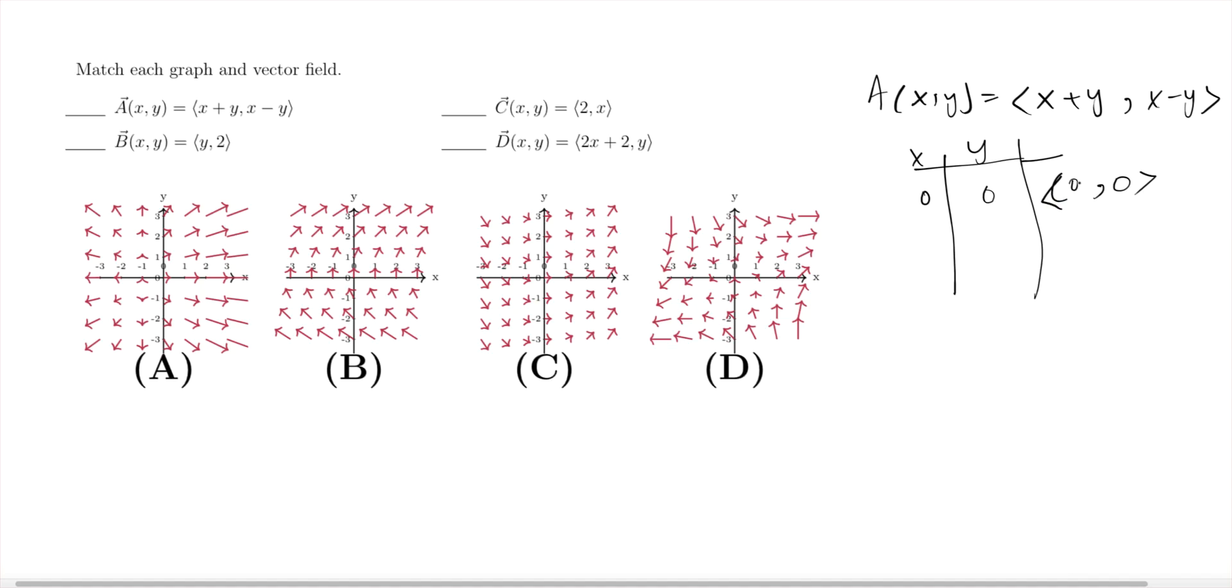So I get basically a zero vector as output. If I put in (1,0), one plus zero is one, and one minus zero is one. How about (0,1)? It's the other way around: zero plus one equals one, zero minus one is negative one.